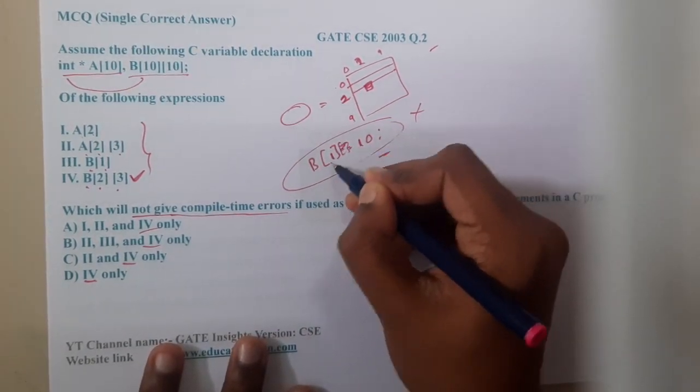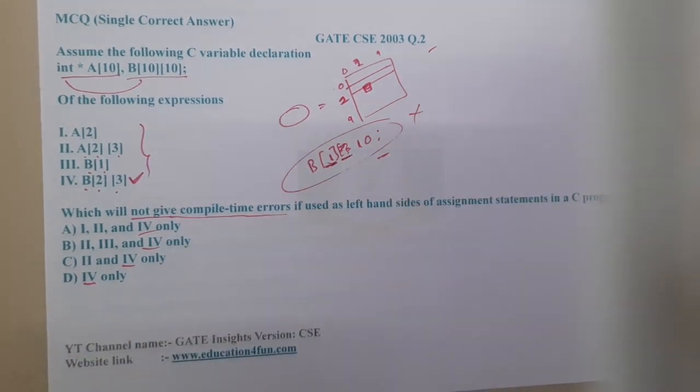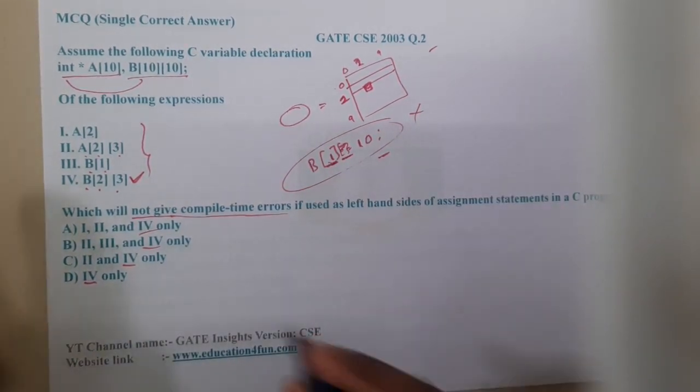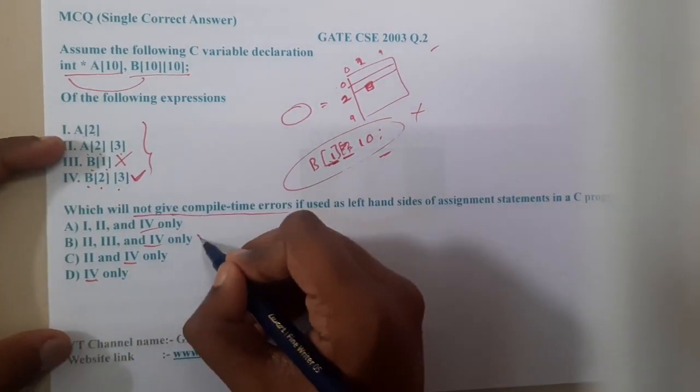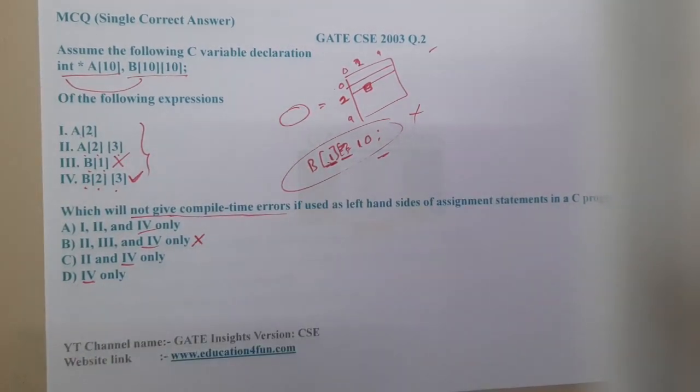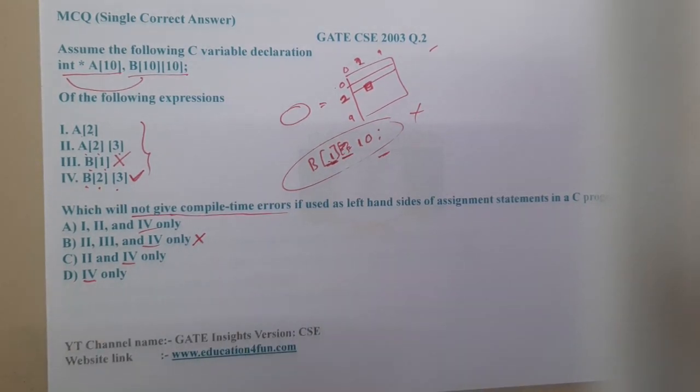The basic thing is it will give you an error, because it is a two dimensional matrix. Which dimension are you talking? Where is the pair dimension? It will be saying that the dimension is missing. That is the reason why 3 cannot be executed. The option 2 or option B is saying that 3 can be executed, so hence that is wrong.